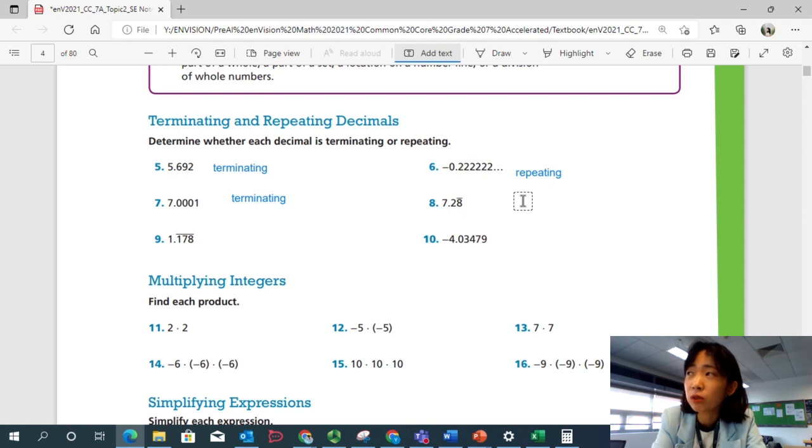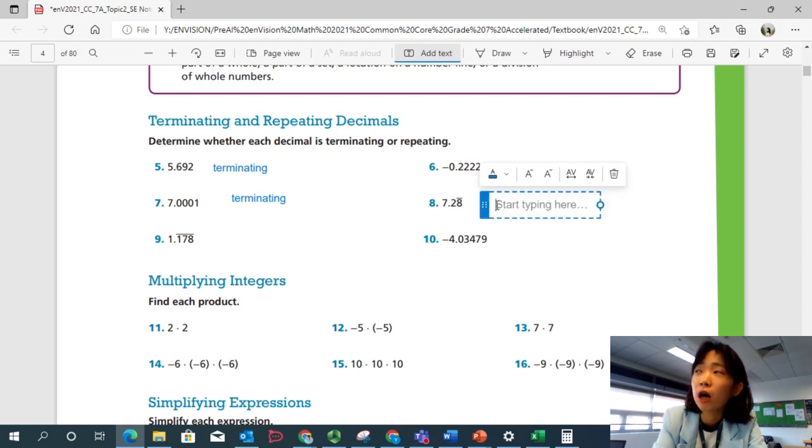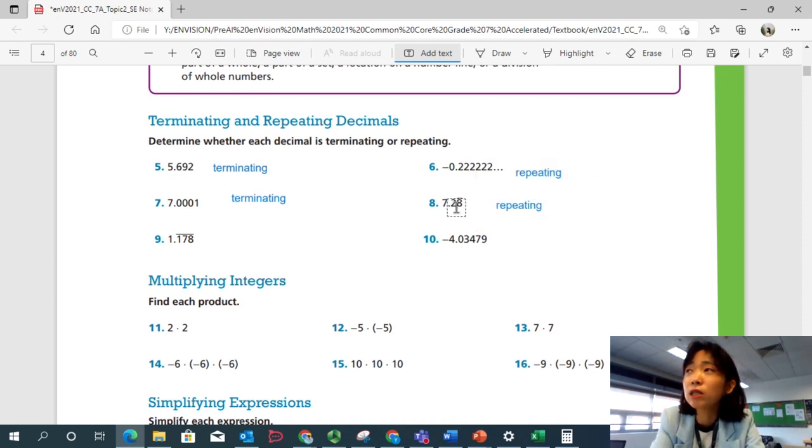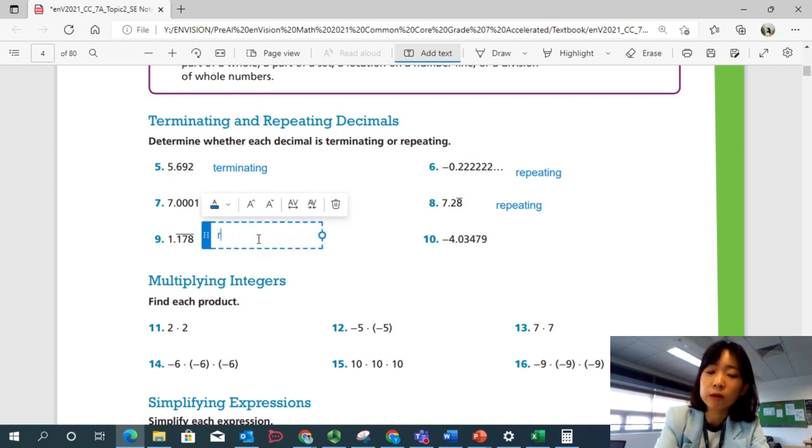Number 8. 7.28888. This is another form of writing repeating decimals by writing a bar over the repeating digits. So if there are two digits that are repeating, you put a bar over the two digits. Or if you look at number 9, 1.178, there is a bar over the three digits. So you have three digits repeating. 1.178, 178, 178, 178, 178 dot dot dot. So that is a repeating decimal.